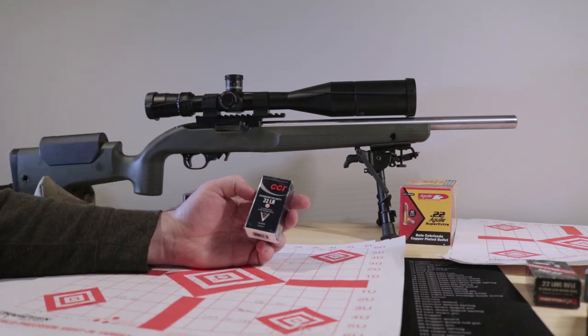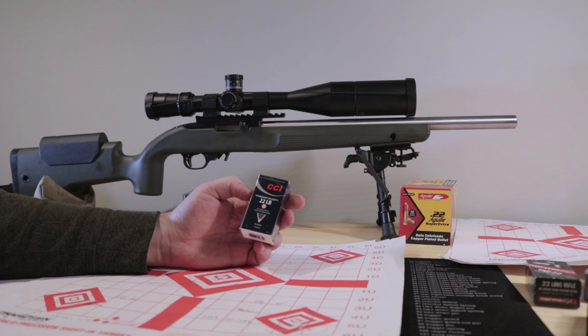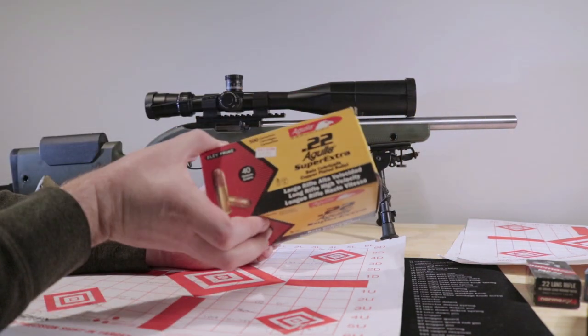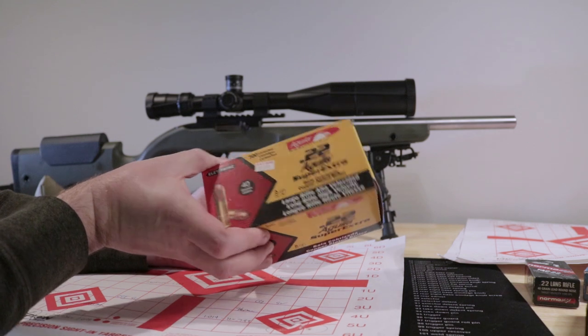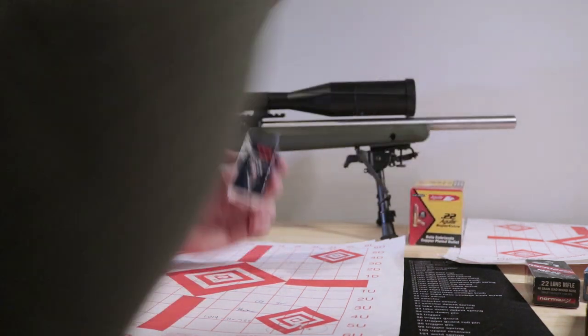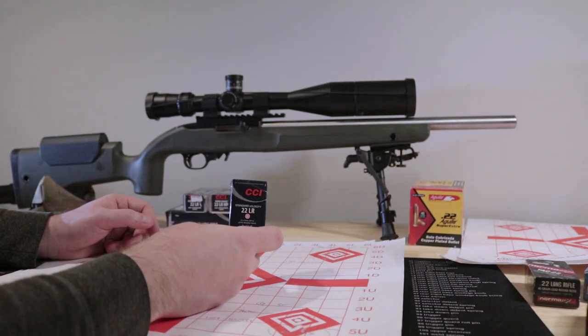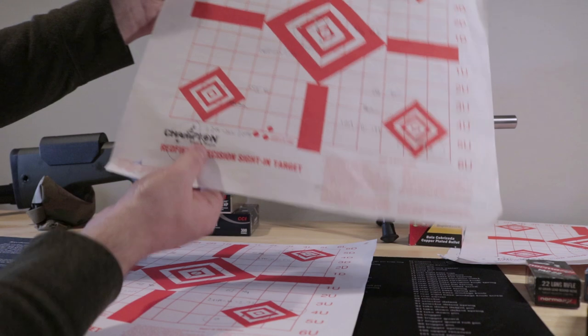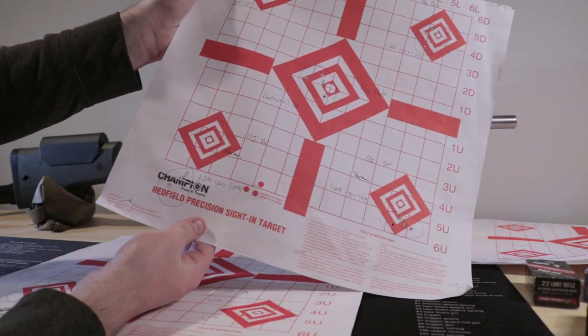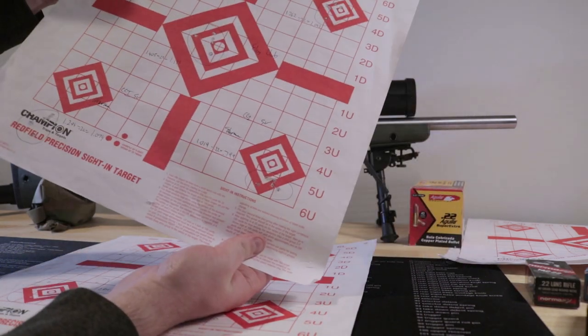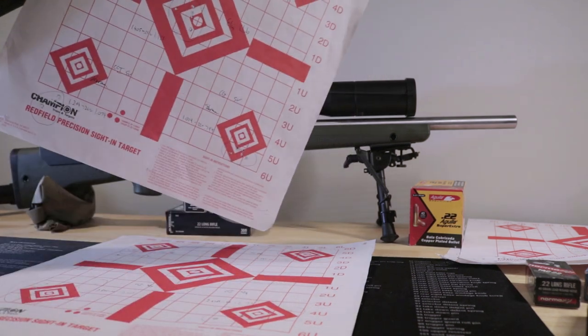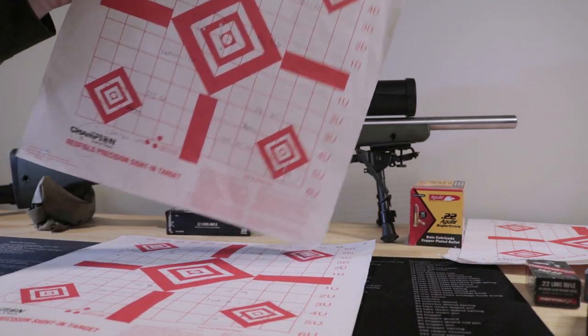CCI Standard Velocity. This is $25, I think, for 500. For example, this was years ago, 42 for 500 Aguila. And the Wolf was 75. So this is some of the cheapest ammo that you can find. And at 100 yards an inch, .8 of an inch. That's just awesome. And you'll see I have more targets with CCI Standard Velocity. And it's always around an inch.